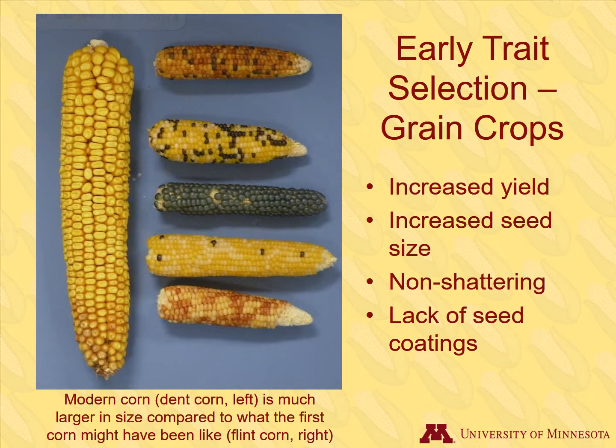Thousands of years ago, early farmers focused on a few main traits when selecting for the best grain crops. Yield was an important trait to them, and this is not surprising — it is clearly useful to select individual plants that produce more grain. The size of the seed was another key trait; the larger seeds were easier to harvest and process.